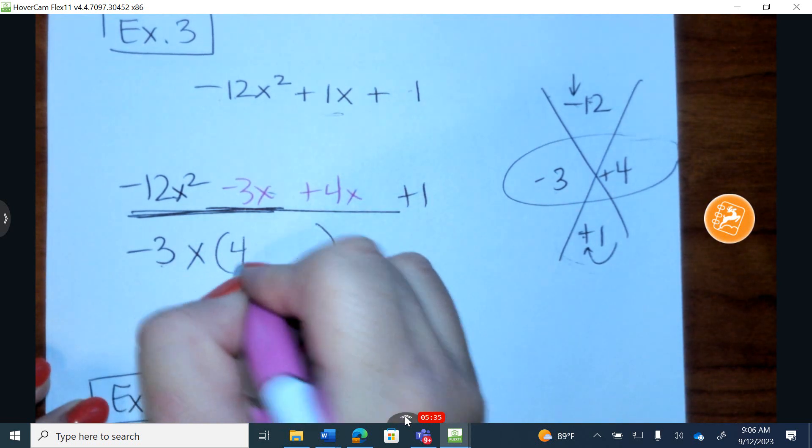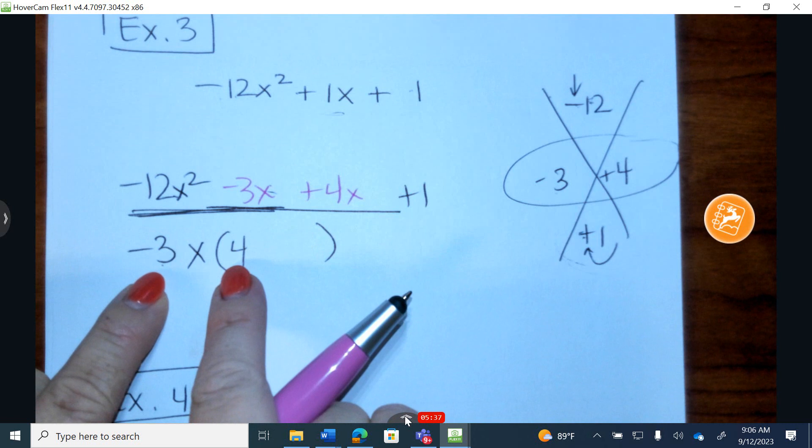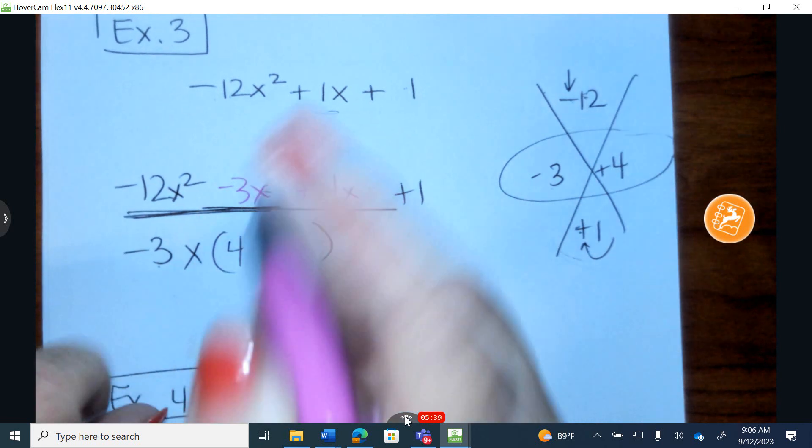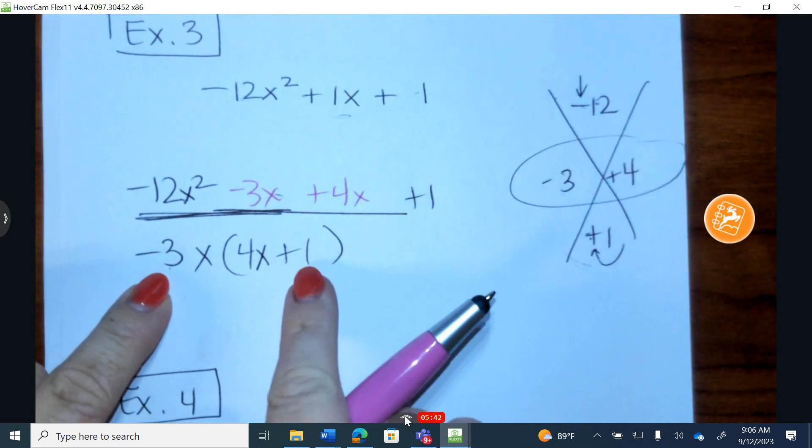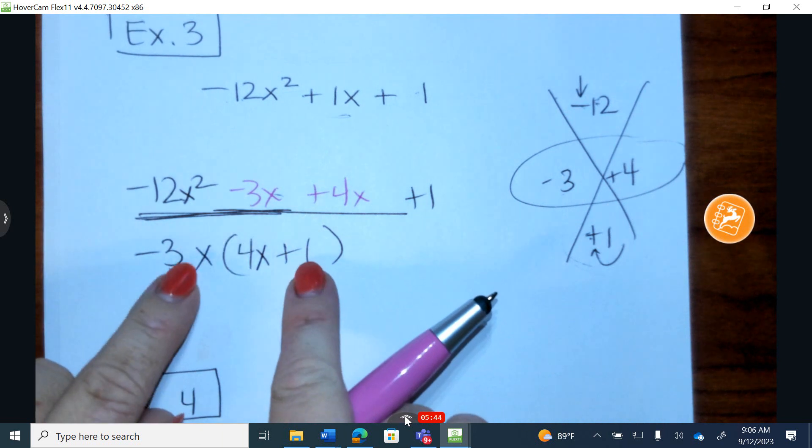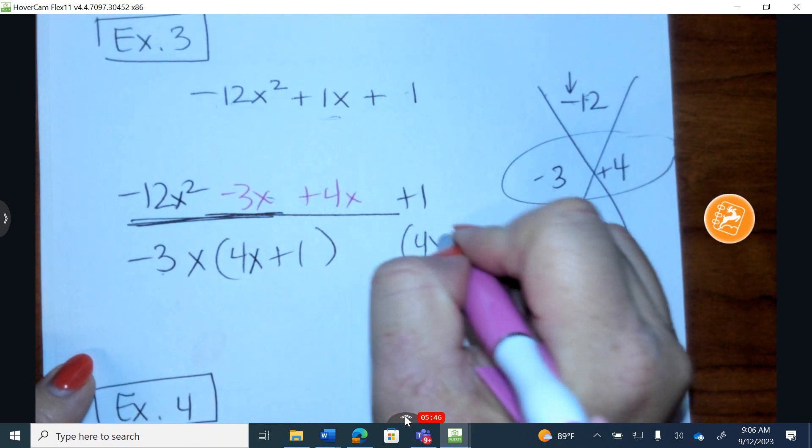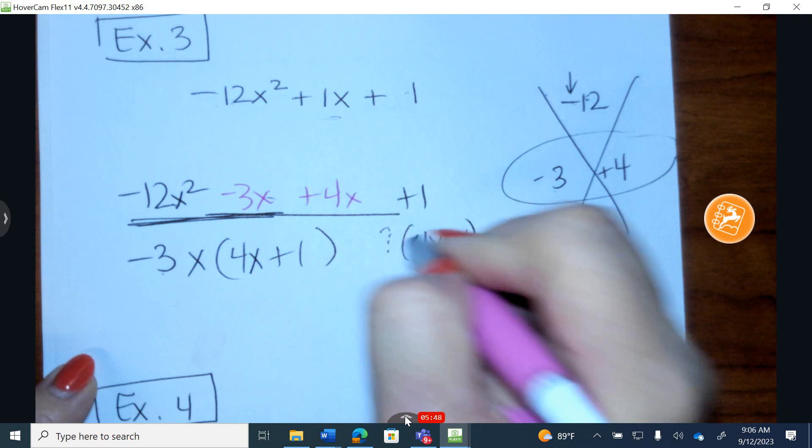I'm left with positive 4. Let's make sure. Negative 12, and I need one more x. Negative 3, and I have an x. Whatever is in parentheses, I write in back. I make a little question mark here.